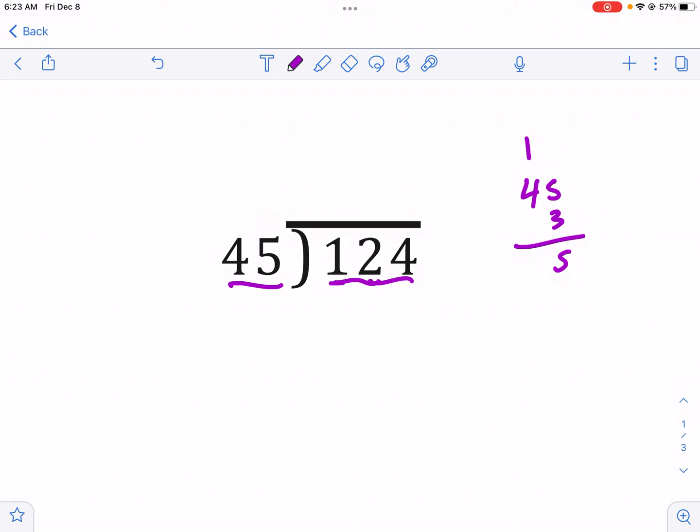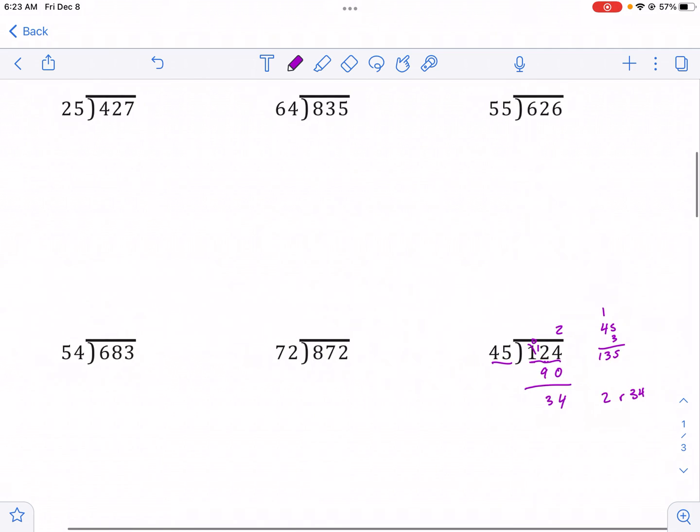So 4 times 3 is 12. Then we add 1 is 13. So 3 is too much. We're gonna have to go to 2 and that's 90. So we have 4, we need to borrow, that goes down to 0. 12 minus 9 is 3. And we have 34. So this answer is just 2 remainder 34. And that's the process.